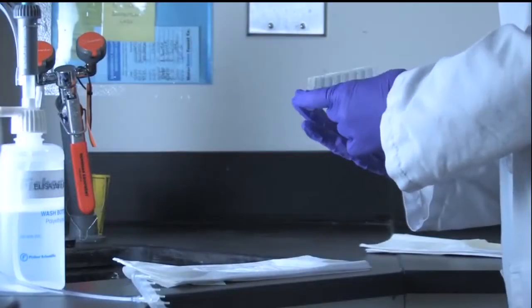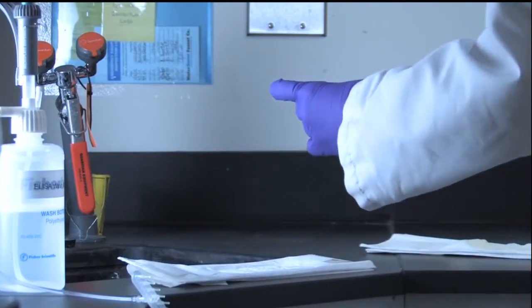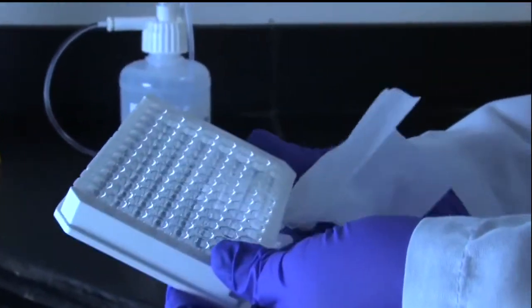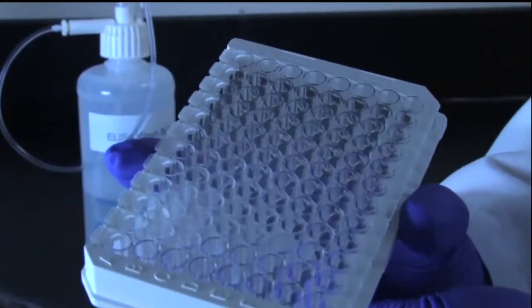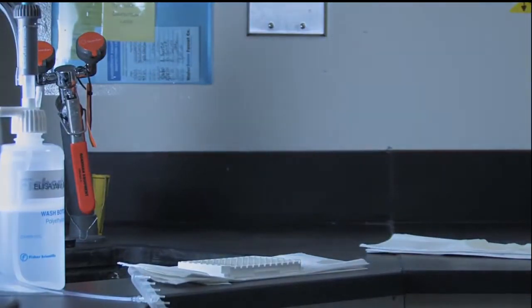Visually inspect the wells for excessive bubbles or residual wash buffer and repeat the tapping motion if necessary. Absorb any liquid from the plate frame, as well as from the bottom of the plate, before continuing with the next step of the assay. Proceed directly to the next assay step to prevent wells from drying out.